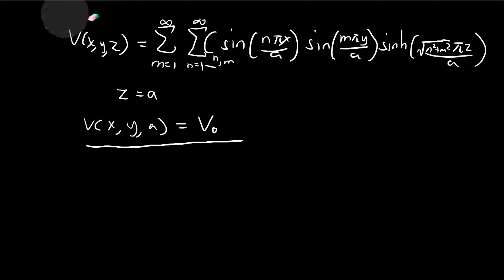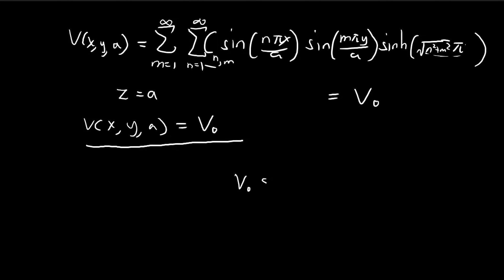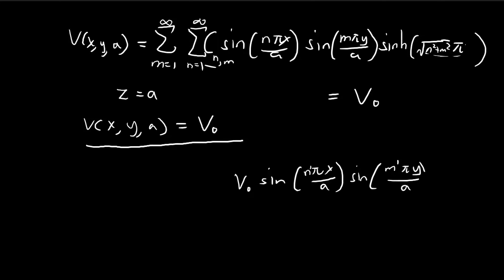Setting z equals a, the hyperbolic sine factors simplify and the full sum must equal V₀. To apply Fourier's trick, we multiply both sides by sin(n'πx/a)·sin(m'πy/a) and integrate over x and y from 0 to a. This integral is applied to both sides of the equation.